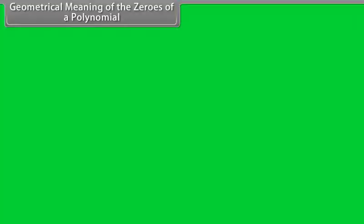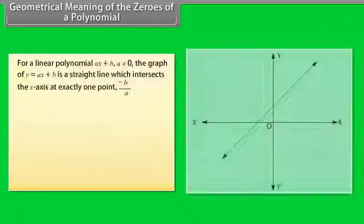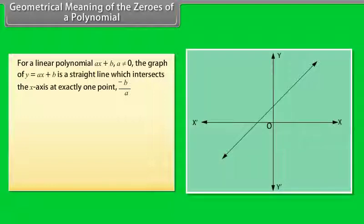Geometrical meaning of the zeros of a polynomial: For a linear polynomial ax + b where a ≠ 0, the graph of y = ax + b is a straight line which intersects the x-axis